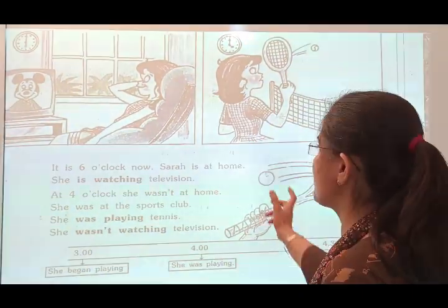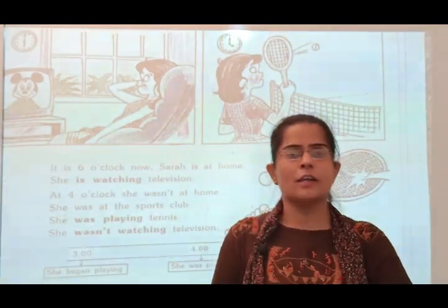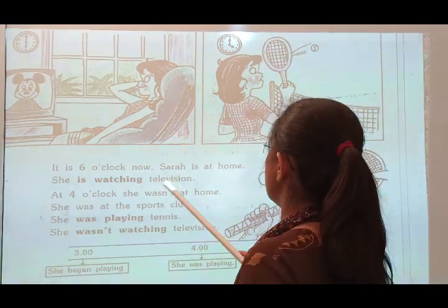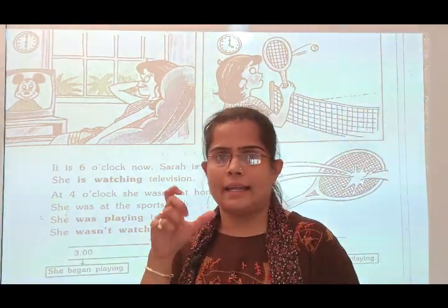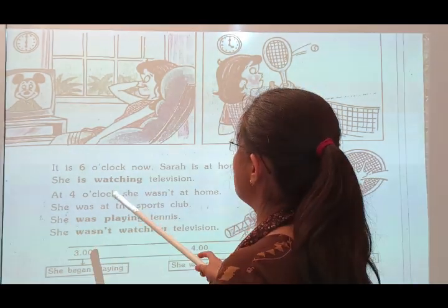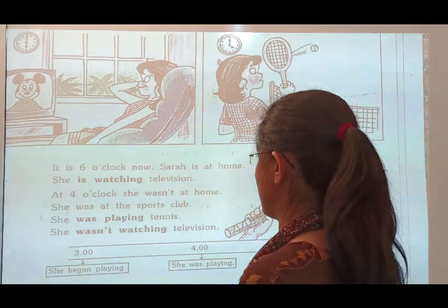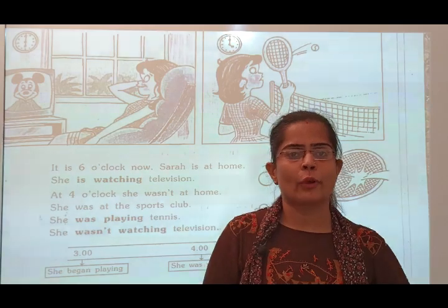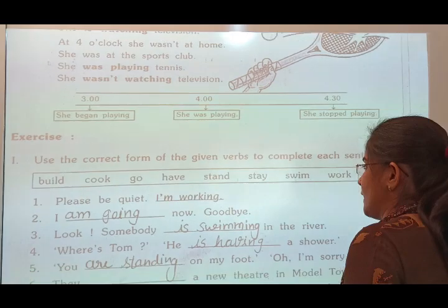Here are some pictures. According to the pictures, we can convert what we see into words using present continuous and past continuous. It is 6 o'clock. Sarah is at home. She is watching television — at 6 o'clock this action is continuing. At 4 o'clock, she wasn't at home. She was at the sports club. She was playing tennis. She wasn't watching television.